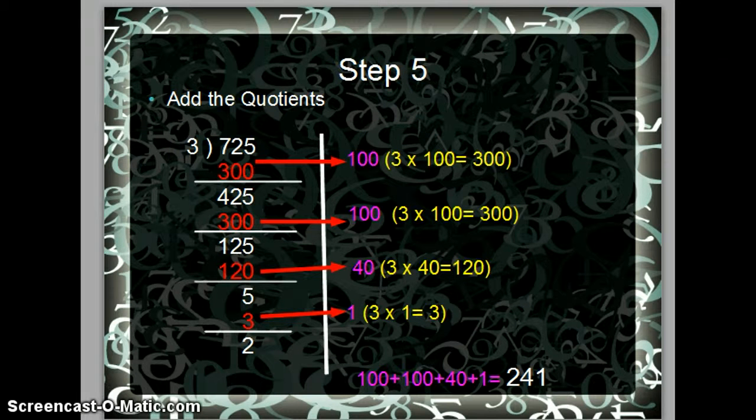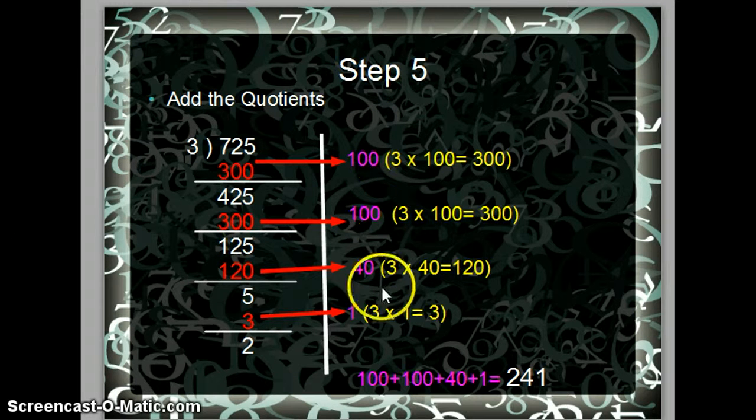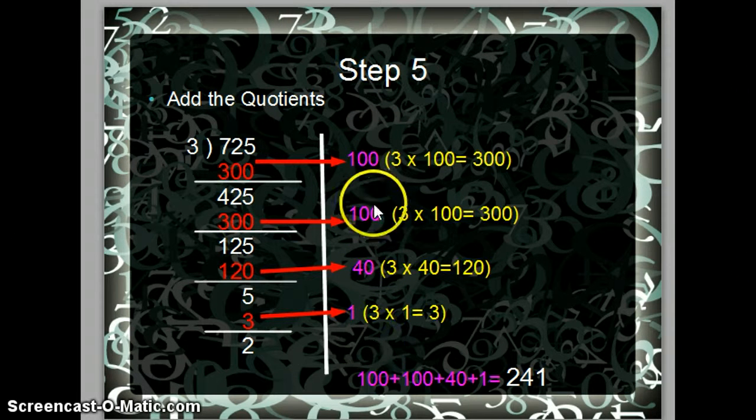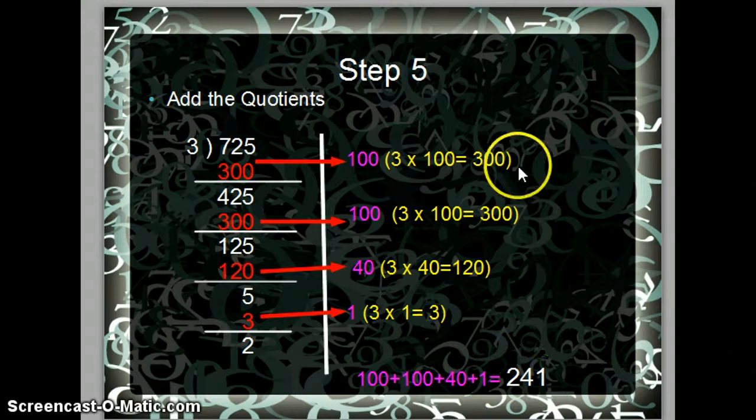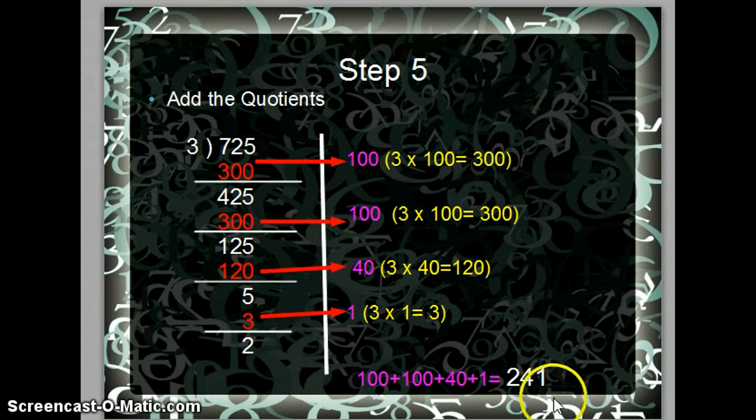Step 5, you want to add all of the quotients. So here are all of our quotients in pink: 100, 100, 40 and 1. So we added them together here at the bottom and arrived with the sum of 241.